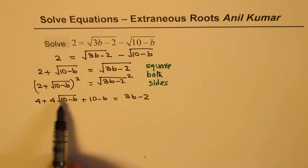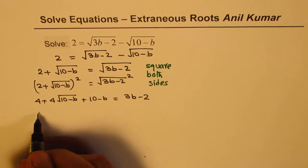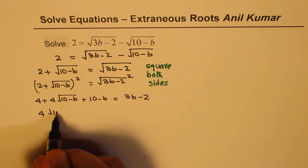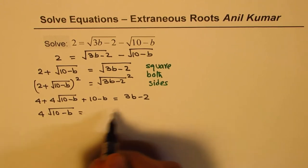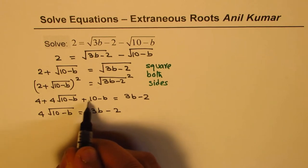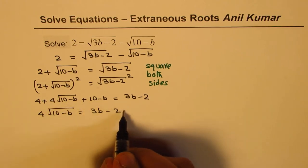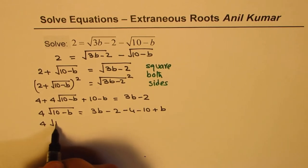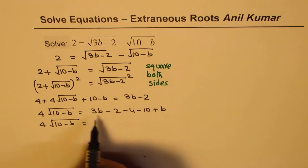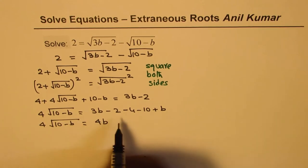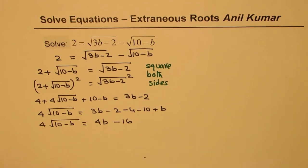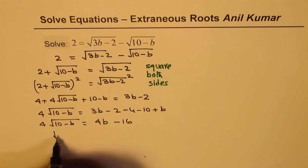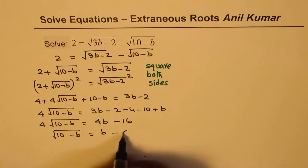Now let's again isolate the radical part. Take all others on the right side. So we have 4 square root of 10 minus b. On the right side we have 3b minus 2, taking these terms on the right we get minus 4 minus 10 plus b. So that gives you 4 square root of 10 minus b. 3b plus b is 4b. Here we have all these minus terms add to minus 16. We can divide by 4 so we get square root of 10 minus b equals b minus 4.